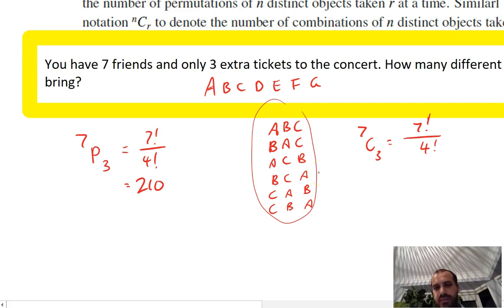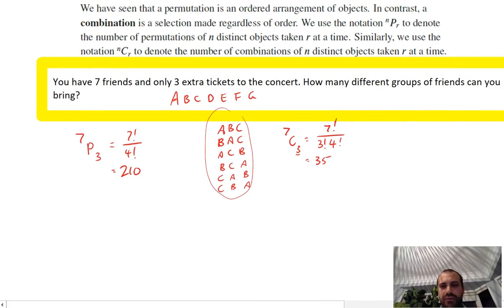And the amount of times you're going to repeat things is by that number there, factorial. Now I've got 210 divided by three factorial, 210 divided by six, which is 35. You have 35 unique friend groups that you could take on this trip to this concert. That's the difference between seven choose three as opposed to seven permute three.